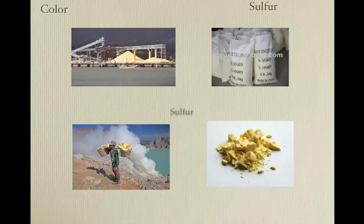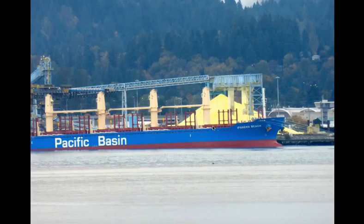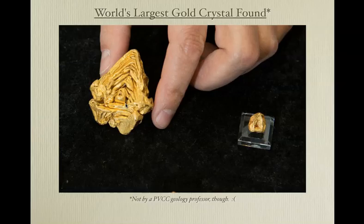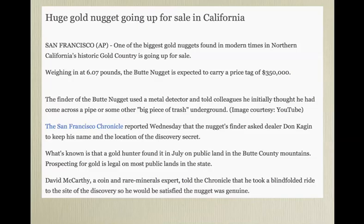This is a huge pile of gold crystals — a person would stand about that tall. This is the world's largest single gold crystal that's been found. Here is gold on quartz. Somebody found a big gold nugget — 6.07 pounds.